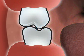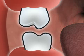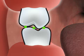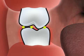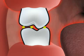Teeth do not just make contact with each other. There are specific points of contact, and these are known as the ABC contacts. Misalignment of these contacts can lead to toothache, tooth decay, periodontal damage, tooth migration, and even facial pain.